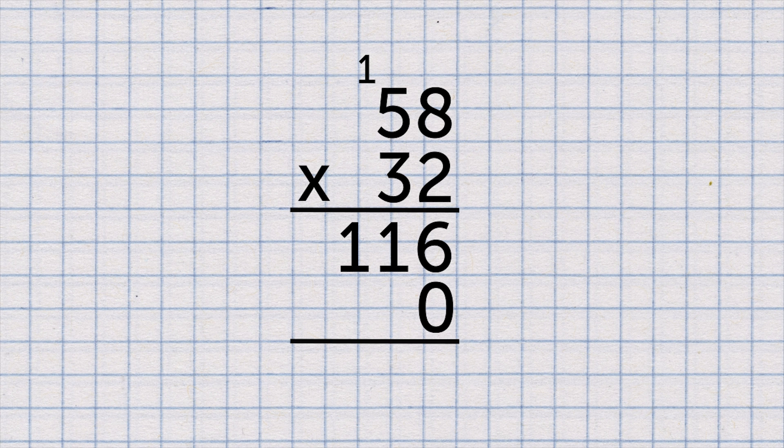Putting the 0 here means we can forget the 3 is a 30 and just multiply 8 by 3. So 3 times 8 is 24. Put the 4 down and carry the 2 over. 3 times 5 is 15. Plus the 2 carried over, 17. 1740.